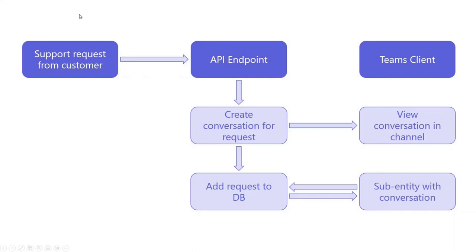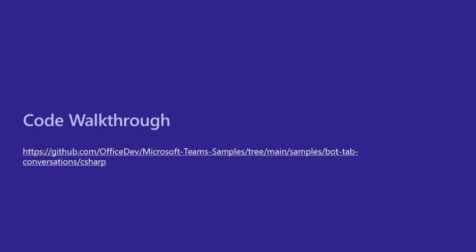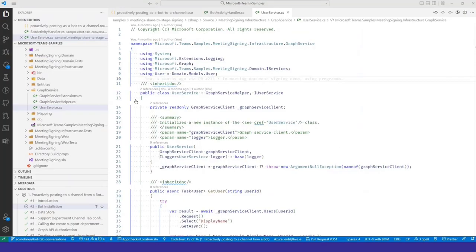Let me run through the workflow summary. It's a simple proof-of-concept workflow: a support request comes in, hits an external endpoint controller, we create a new conversation for the request, and that conversation ID is stored along with the request in a database. Inside your Teams client, you can view the conversation in a channel, open the specific request in the tab view by deep linking to it, and the tab queries the database for the request details and conversation ID to open it in the tab sidebar. This code is available today on the Microsoft Teams sample repository.